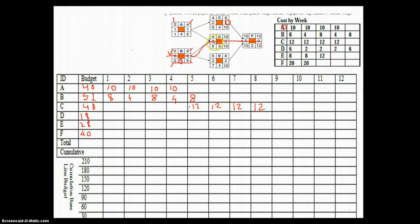Activity D depends on completion of activity A and B as indicated by these two arrows. So we have to wait till month 6 to begin work on activity D. And the budgetary provisions are 6, 2, 2, 2, and 6.